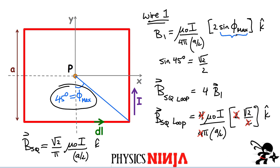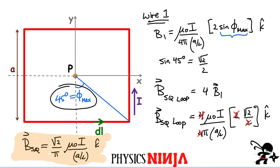That's the final expression for the field produced by the square loop. If you have any questions, please leave them in the comments section and I'll get back to you. Hopefully you understood this derivation — I tried to include all the steps so it's easy to follow. Thanks for watching, folks.